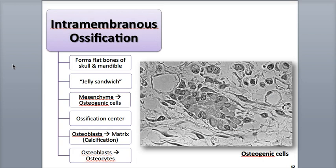Intramembranous ossification is the process that forms the flat and irregular bones of the skull, face, and mandible, or lower jaw, as well as hardens the fontanelles, or soft spots, of the fetal skull.